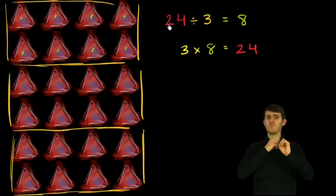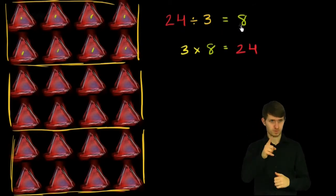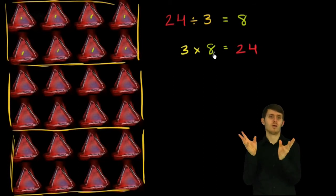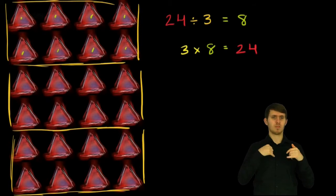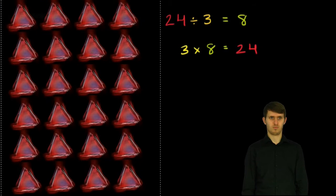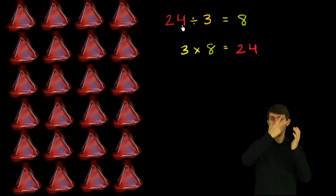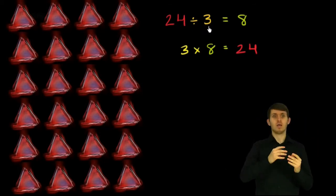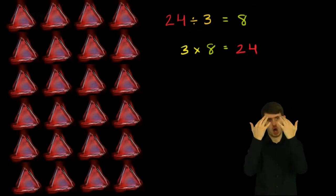So we started with 24 things, divided it into three equal groups, and got 8 in each group. Or you could say 3 equal groups of 8 is equal to 24. But there are even other ways of thinking about this. You could also view 24 divided by 3 as dividing 24 into groups of 3.